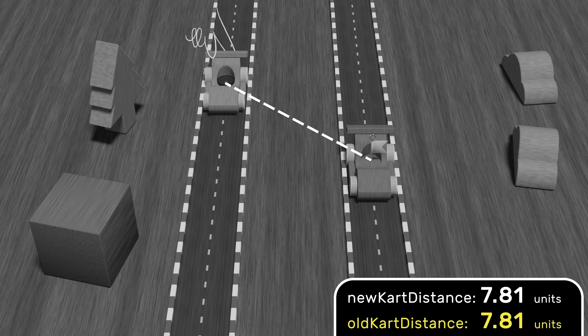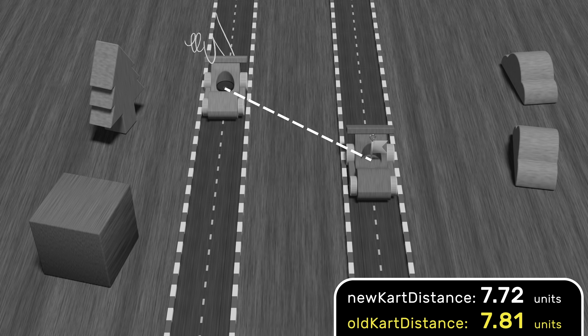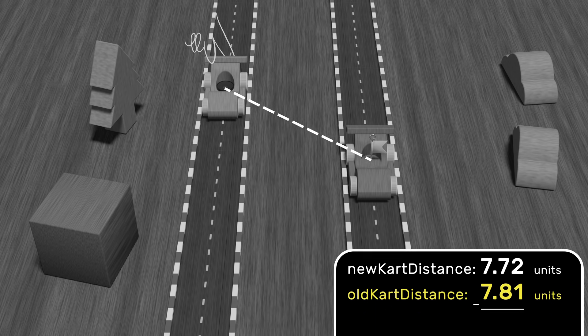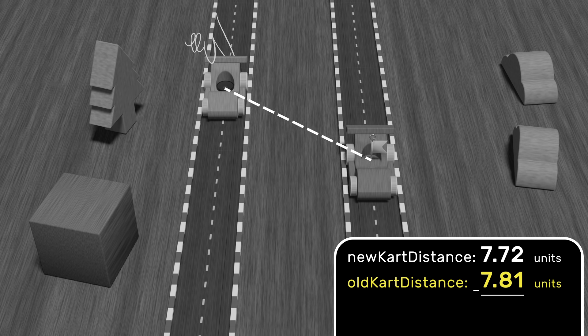But before old cart distance is updated, we'll compare the two, just subtract old from new. And that difference becomes our rate of change, in units per frame. We store that rate of change as a variable, velocity relative.